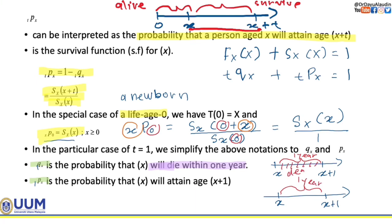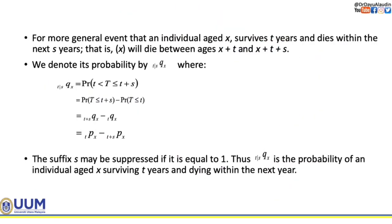So this is about looking for the probability of death — we use qx. And we are looking for the probability of survival — we use px. Next, for the more general event that an individual aged x survives t years and dies within the next s years — that is, x will die between age x plus t and x plus t plus s — we denote it with this notation.